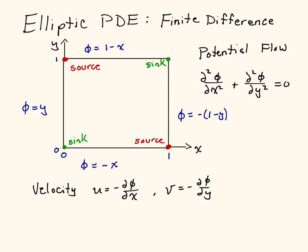The differential equation that we're going to solve today is partial squared φ partial x squared plus partial squared φ partial y squared equals 0, which is given right here. And that's an equation for the potential φ of the flow. The problem that we're going to look at has two sources and two sinks situated at opposite corners of this square box.